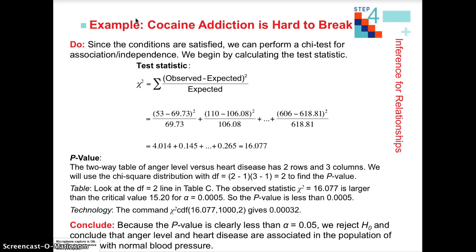Our p-value of 0.00032 is much less than our alpha level of 0.05, so we reject the null hypothesis and conclude that anger level and heart disease are associated. Our null hypothesis was that there is no association — that they are independent of one another.